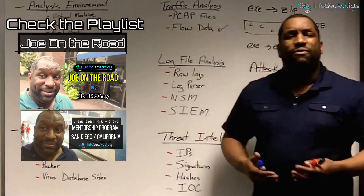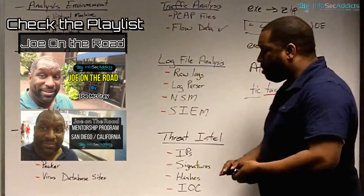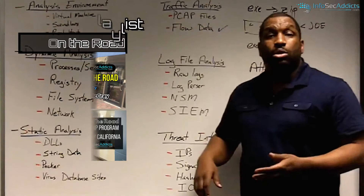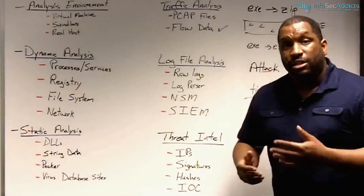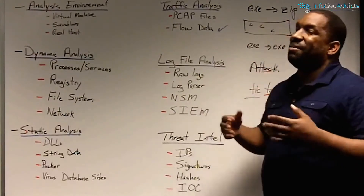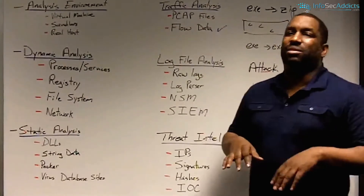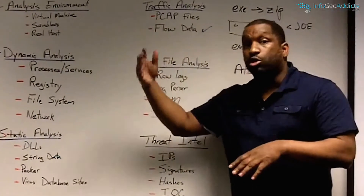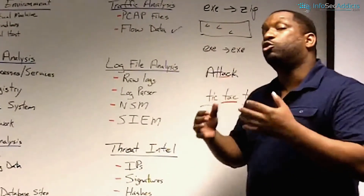Our last thing is going to be log file analysis. With log file analysis, what we end up with is commonly raw logs. Your raw logs could be web server logs, router logs, switch logs, any type of network device logs, your IDS logs - it can be all this kind of stuff. A lot of times you might have some clunky way of looking at that stuff. You might write command line things to look at it. When I used to do this, I would do a lot of grep, which is a UNIX command that lets you search for something.